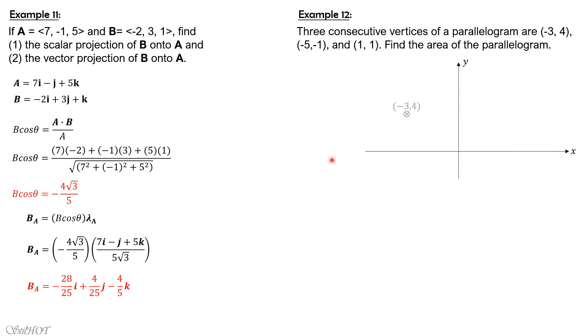So let's plot the points. So (-3, 4), then (-5, -1) in counterclockwise manner, then (1, 1), and then the missing side should be, you have to verify, it should be (3, 6).